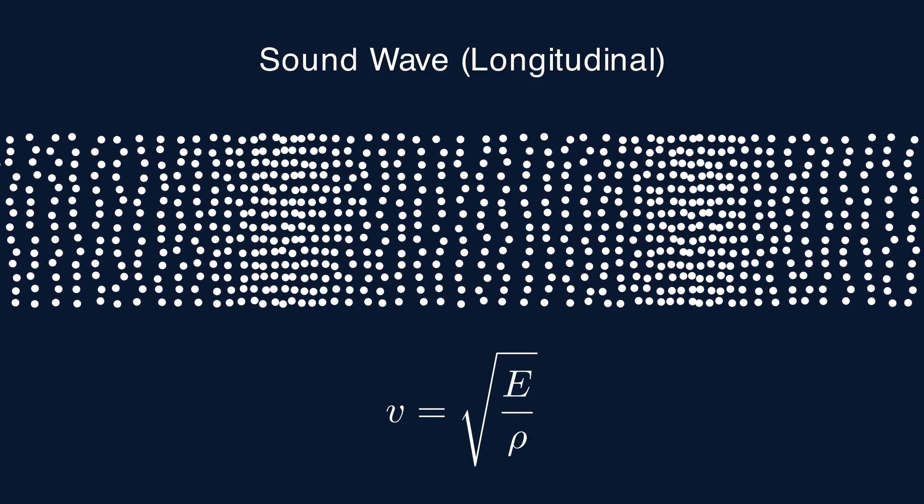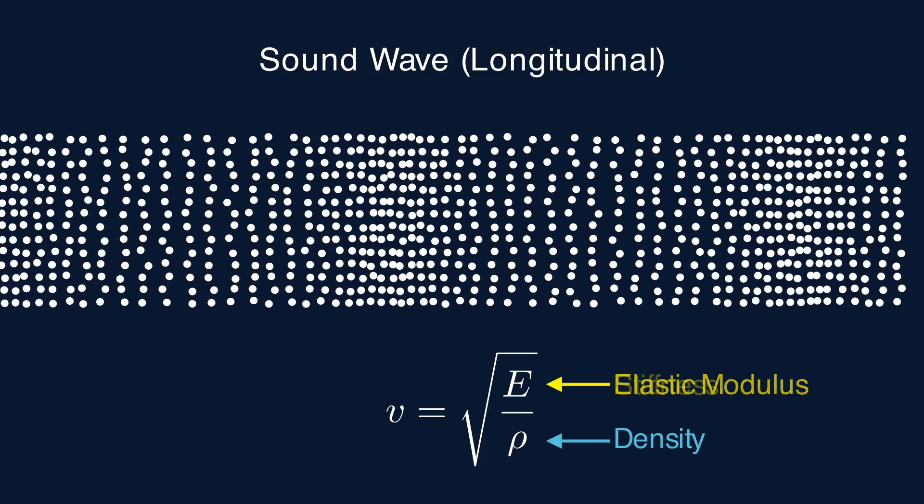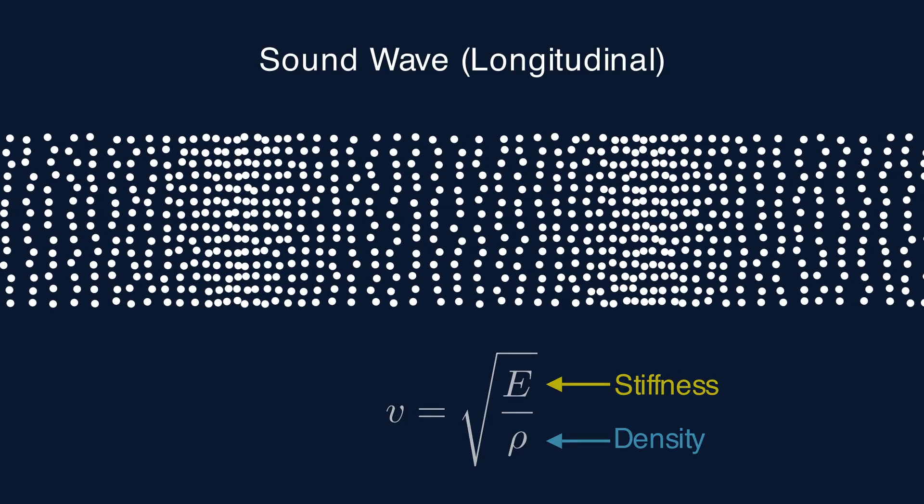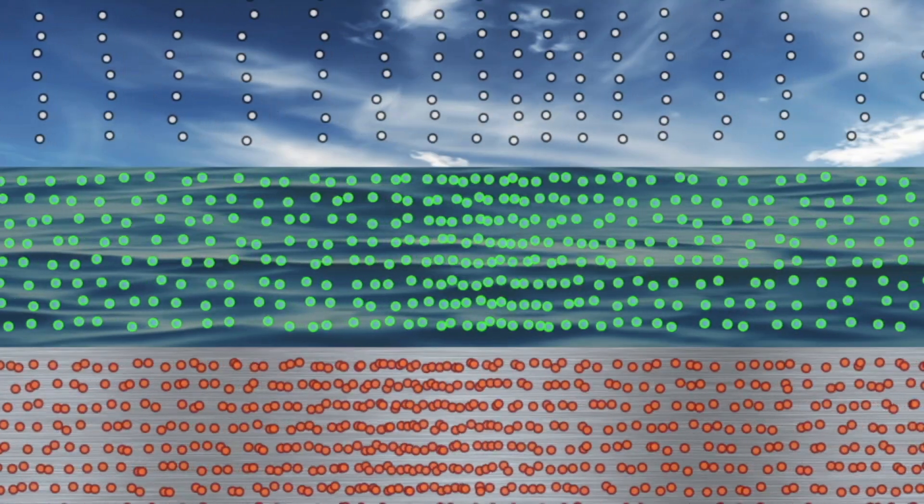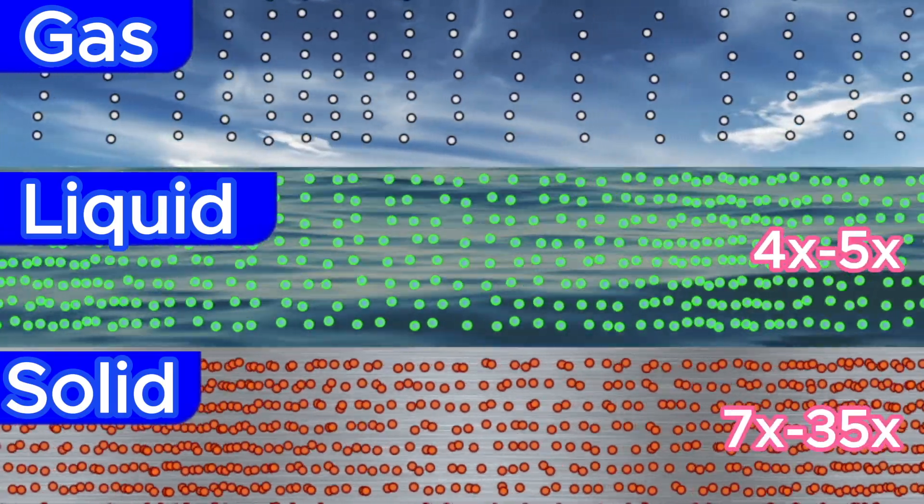On the other hand sound is a longitudinal wave that travels via the vibrations of particles. Its speed depends on the material's elastic modulus or stiffness. In solids atoms are locked together by rigid bonds allowing the vibrations to travel much faster.